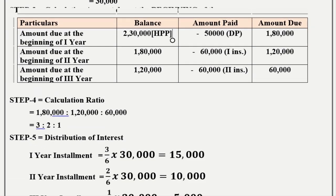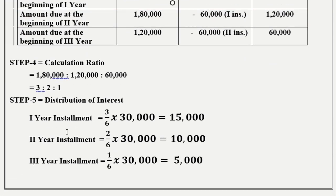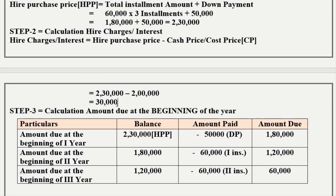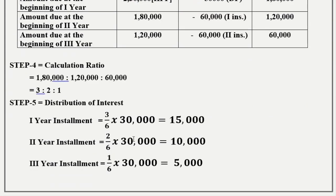Step 5: Distribution of interest. First installment ratio is 3, second is 2, third is 1, total is 6. First installment interest: 3/6 into Rs. 30,000 equals Rs. 15,000. Second installment interest: 2/6 into Rs. 30,000 equals Rs. 10,000. Third installment interest: 1/6 into Rs. 30,000 equals Rs. 5,000. So the interest amount is now distributed.